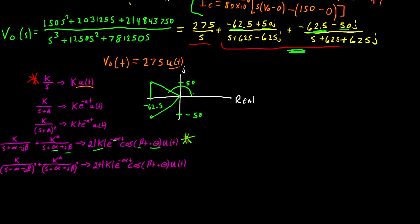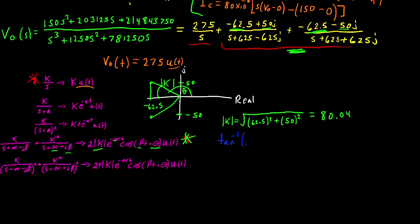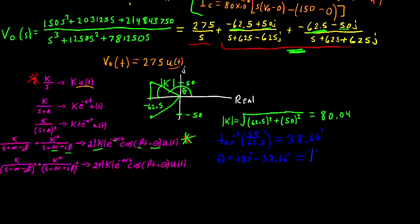I'm going to find the magnitude of k using the Pythagorean theorem: |k| = √(62.5² + 50²), which gives a value of 80.04. Next I need to find angle theta. I'll find the angle inside my triangle and subtract it from 180. The angle inside the triangle is arctan(50/62.5), which gives 38.66 degrees. So theta = 180° − 38.66° = 141.34 degrees.